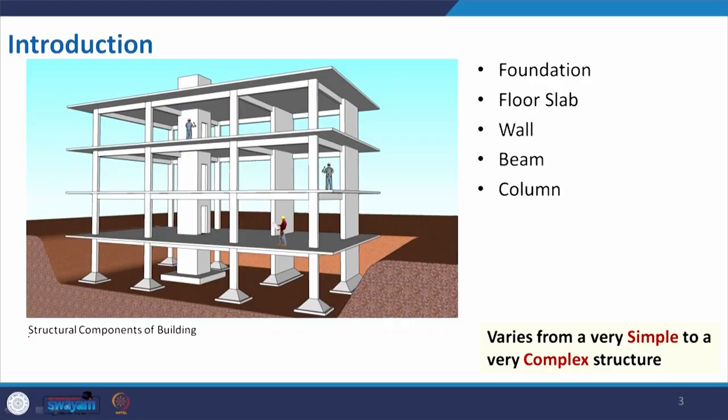The fundamental mechanism is: load comes on the slab, the slab transfers load to the beam, the beam transfers it to the column, and finally it transfers the load to the foundation, which transfers it to the ground. We will go into detail when we discuss different kinds of loads and how they act on the building. What is shown in this slide is a very basic, simple apartment building — a straightforward design and concept.